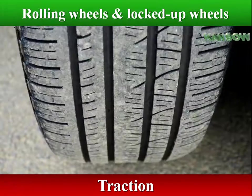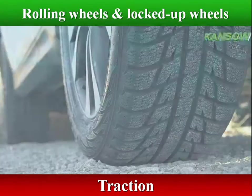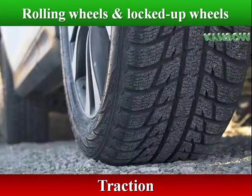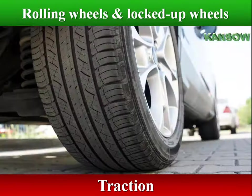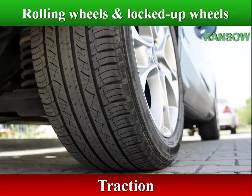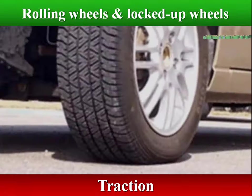When tires roll over the surface of the road, they create traction. Traction makes your vehicle grip the road so you can control speed and direction. Traction is the amount of grip between the tire tread and the road surface. The traction of the tires on the roadway pushes your vehicle forward.